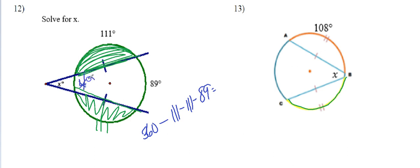So now I know that this is 49. So then I just use my formula: big arc minus the small arc, which is 40 divided by 2, gives me 20 degrees for x.